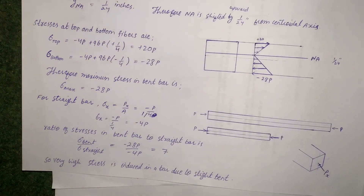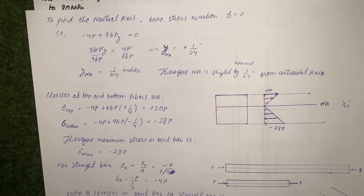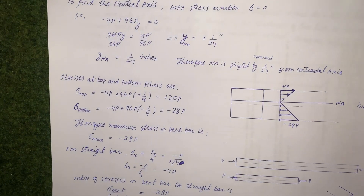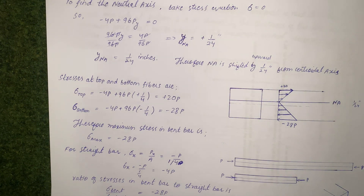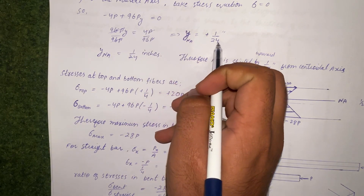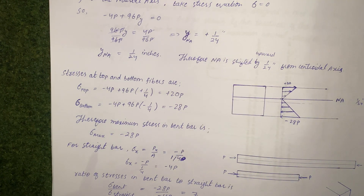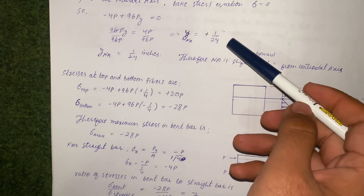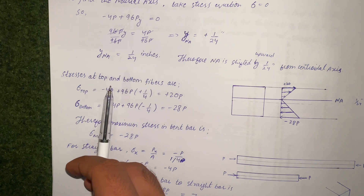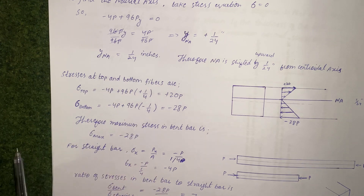To locate the neutral axis, set the fiber stress equation equal to zero: −4P + 96Py = 0, which gives y = 1/24 in. This means the neutral axis has shifted upward by 1/24 inch from the geometric centroid.